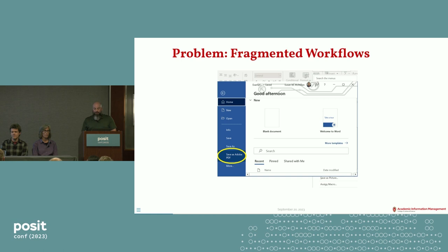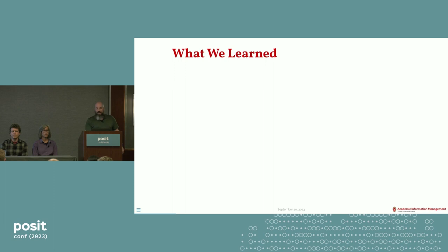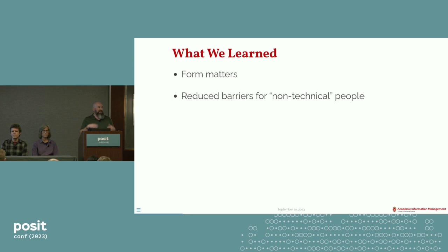We needed to find a better way to work together. Keep in mind, this is happening after our university went remote during COVID, and we're each working remotely. We don't have an opportunity to meet together to do these things. So what we're going to talk about is how we abandoned this and what we learned as we came to a new way of working together. I'm going to share why the form of the work matters. Susan's going to speak about how our new way reduced barriers for non-technical collaborators, and Mike's going to share how this new way enhanced the accuracy of our work.